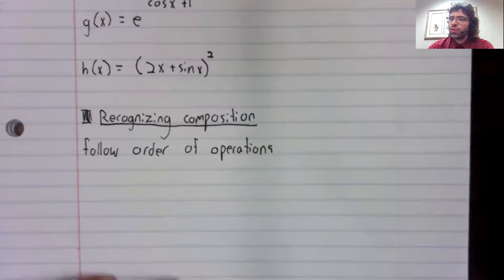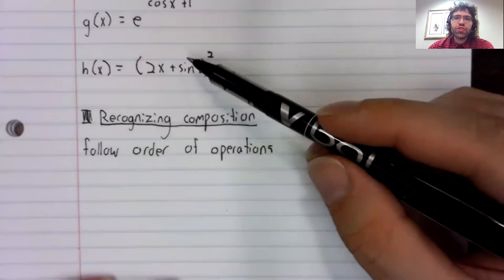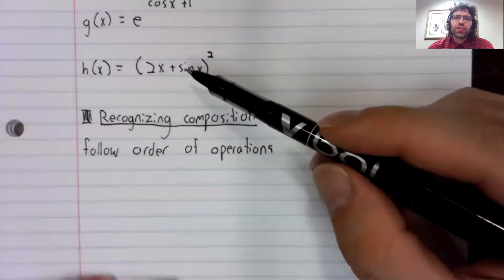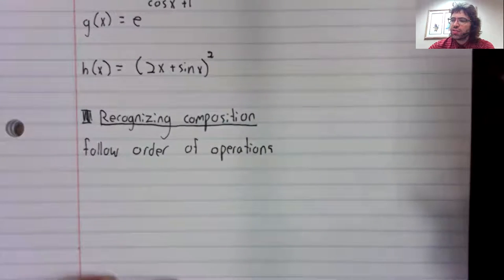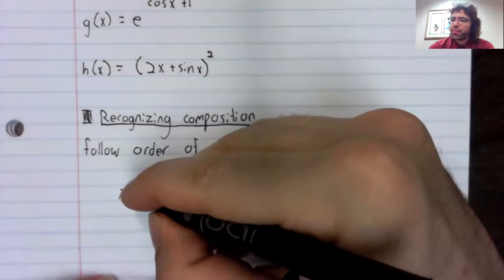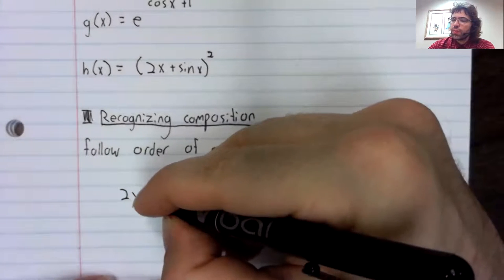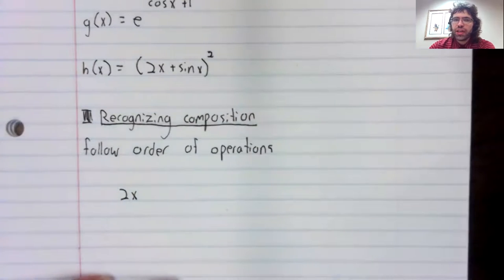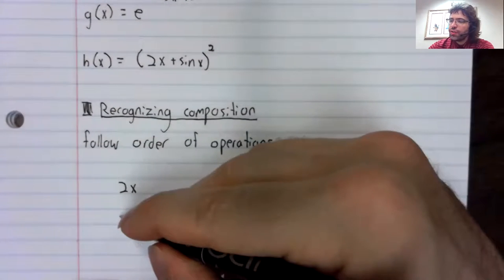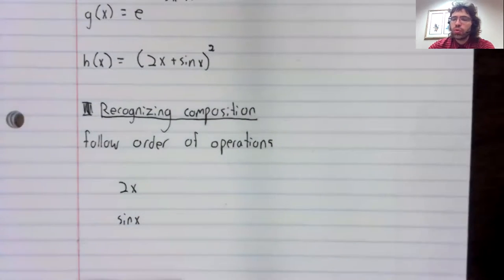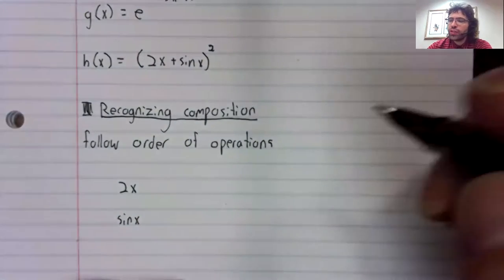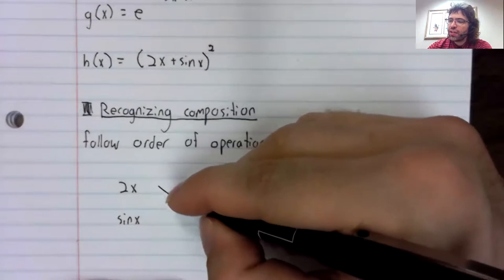So let's look at h of x. In terms of order of operations, what's happening? Well, you've got multiplication and you've got the sine. You multiply x by two, and you take its sine.